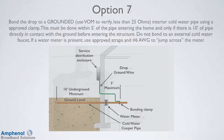On option number 7, the drop is bonded to a grounded interior cold water pipe using an approved clamp. This must be done within 5 feet of the pipe entering the home, and only if there is 10 feet of pipe directly in contact with the ground before entering the structure. You need to verify that there is 25 ohms or less of resistance to a ground in the house. If a water meter is present, use approved straps and a number 6 gauge wire to jump across the meter. Many cable TV companies no longer allow this practice as it's too hard to verify the 10 feet of pipe in the ground. Water meters have neoprene bushings, so a number 6 copper jumper would need to be installed to ensure continuity. Never bond to a black pipe (which is gas) or to an external cold water faucet.